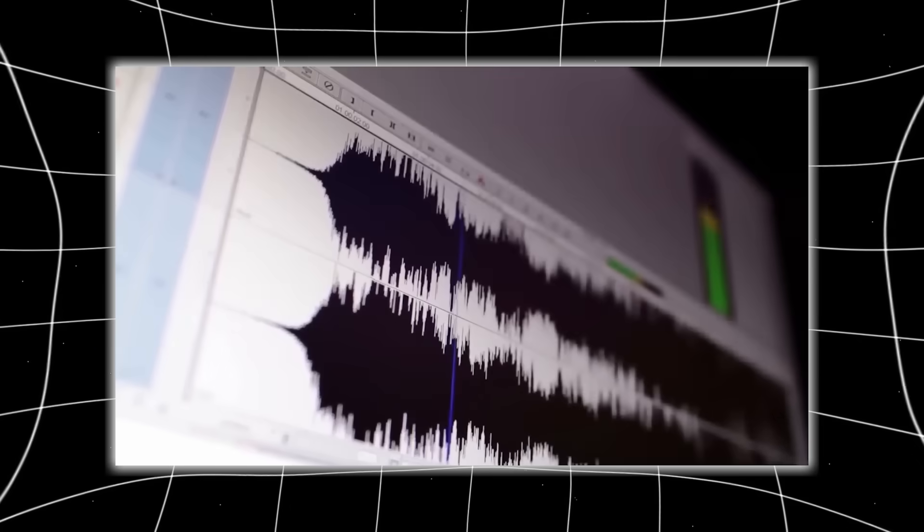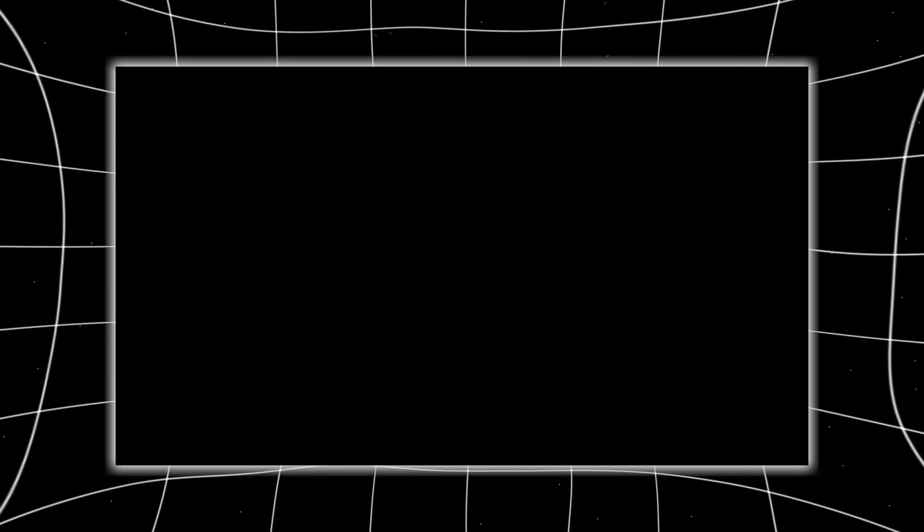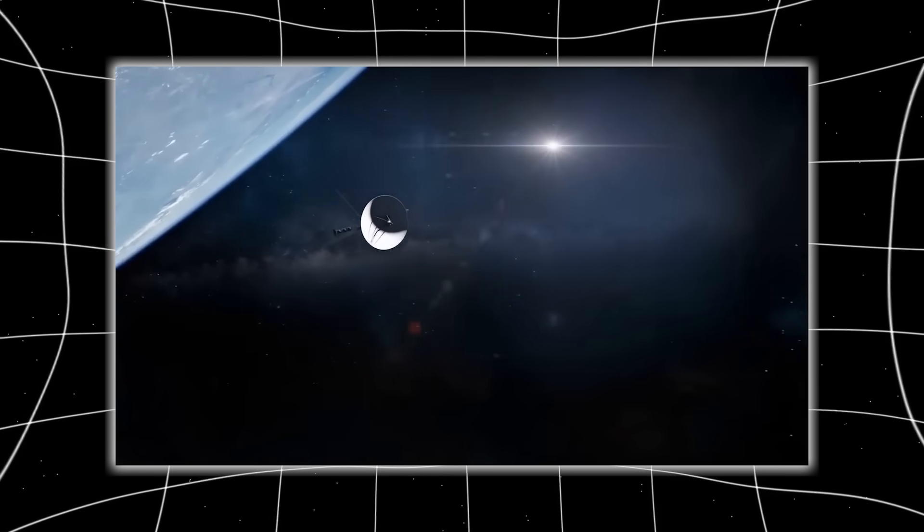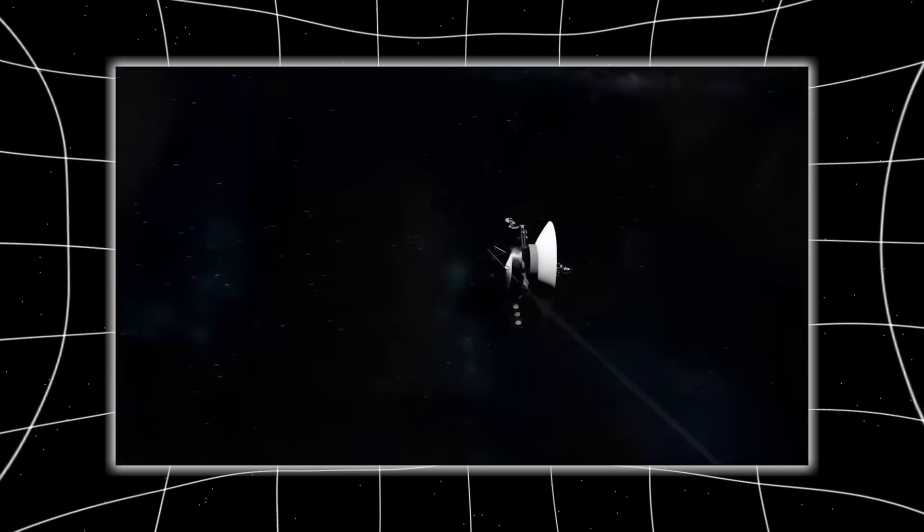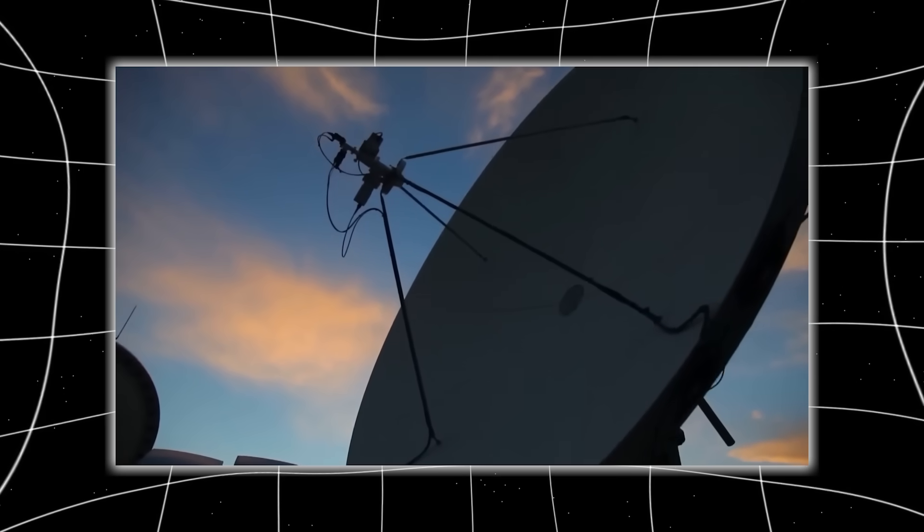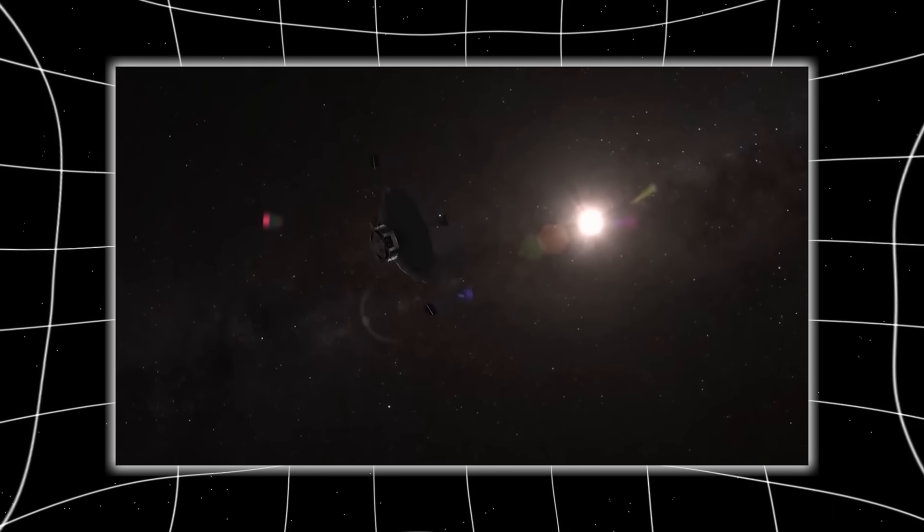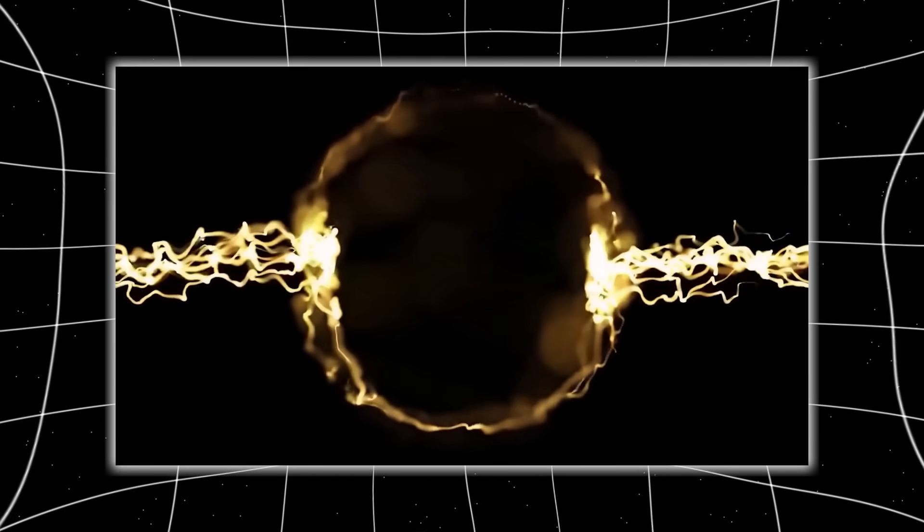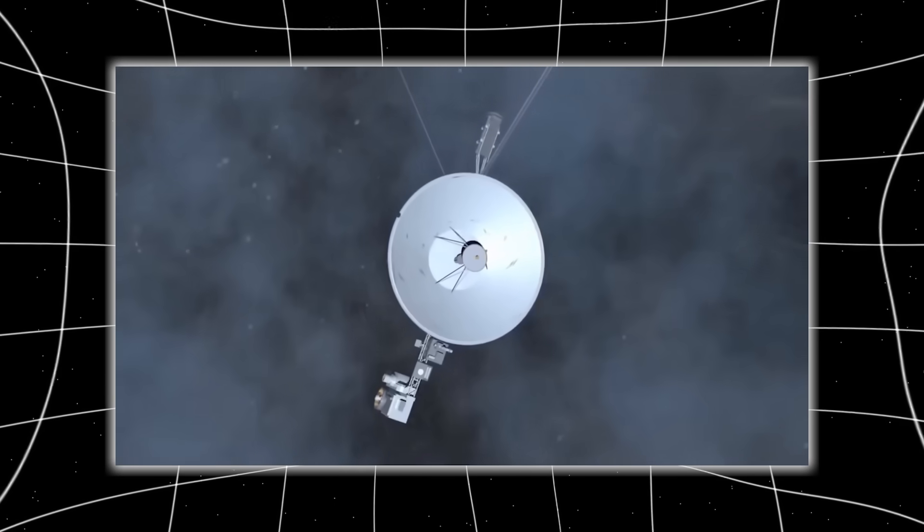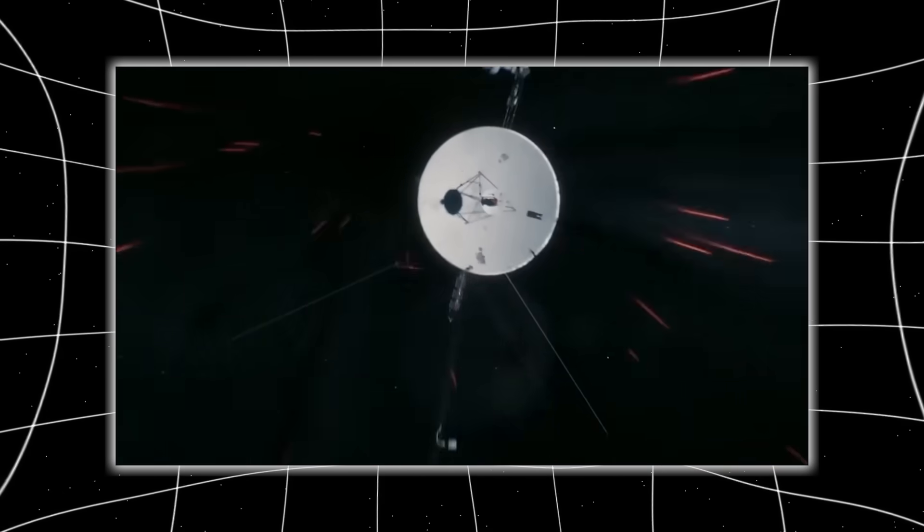And now, Voyager 1 has detected something else. A repeating anomaly in the plasma readings that forms a consistent field, like a barrier. NASA scientists refer to it as the interstellar wall, but what's baffling is its uniformity. Space isn't supposed to form walls. And yet, this one appears to resist change, remaining in place despite the constant drift of the probe.